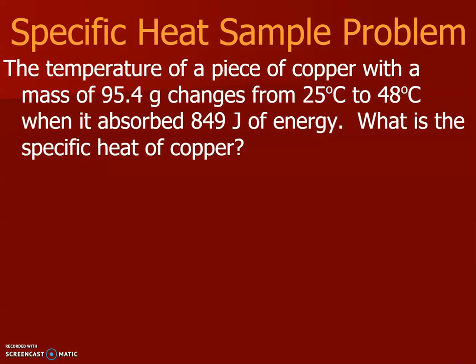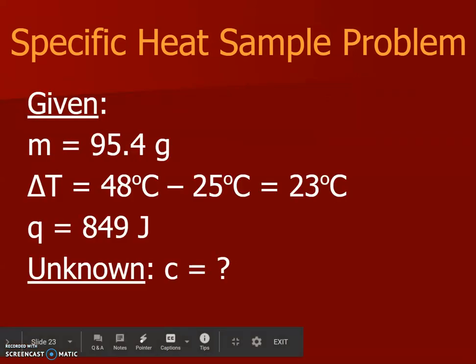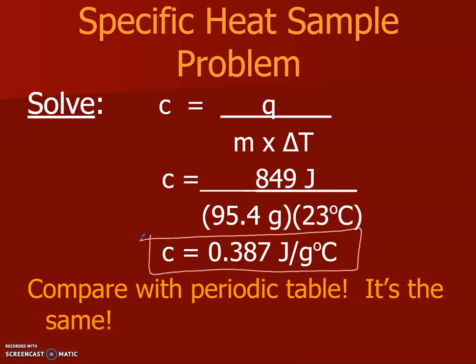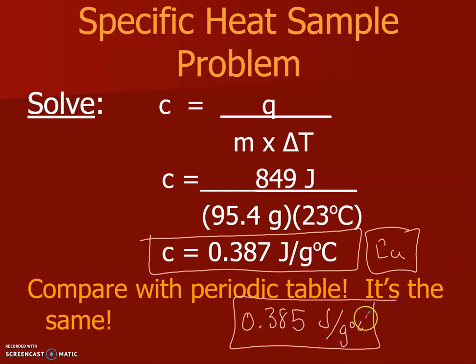And you'll see in our next slide here we identify the variables, there's our ΔT, we're looking for c, and yes, we have our values right here: 0.387 joules per gram degree Celsius. This was copper, so on the back side of your periodic table you will see that the specific heat is going to be listed. It is 0.385 joules per gram degree Celsius. Well, guess what? That's pretty much the same in my book. So that is how we figure out our specific heat equations.